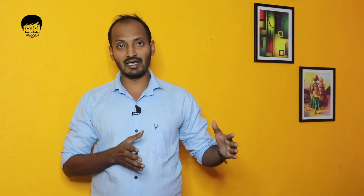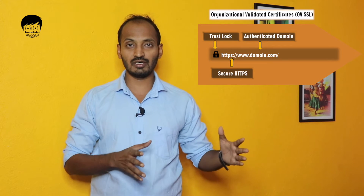Next is the Organization Validated certificate. Its validation level is a little higher than the domain level — it has mid-level security. The SSL certificate you get here is mainly for organizations. The CA, the Certificate Authority, verifies your organization. It is similar to a background verification process — the same kind of process applies for SSL organization verification.